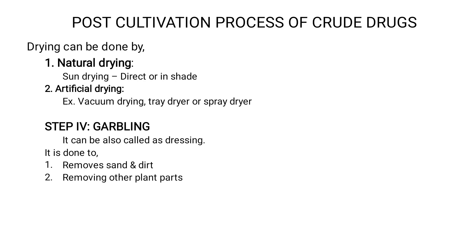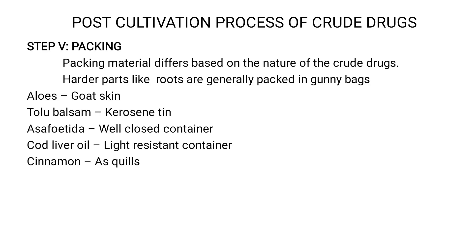The next step is garbling. Garbling refers to the dressing or cleaning of the crude drug. After drying, we inspect the crude drug, clean it, and remove sand, foreign matter, and other plant parts. Removing all these impurities and making it a pure, quality product is called garbling.